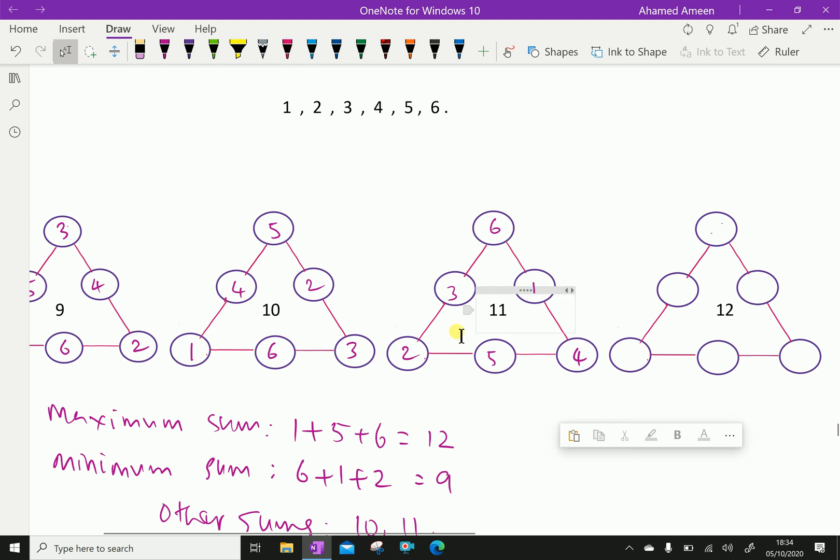That is, 1, 2, 3, 4, 5, 6. Check that addition. 6 plus 3 is 9, 9 plus 2 is 11. 2 plus 5 is 7, 7 plus 4 is 11. 4 plus 1 is 5, 5 plus 6 is 11.